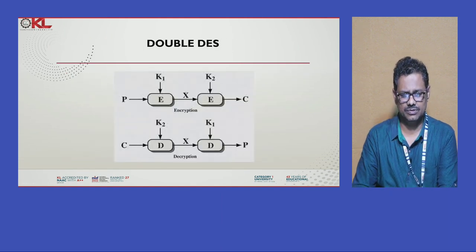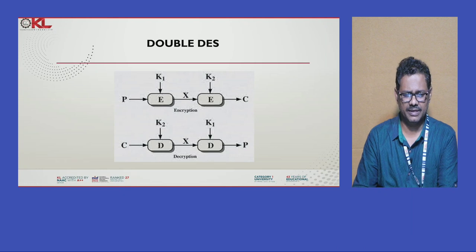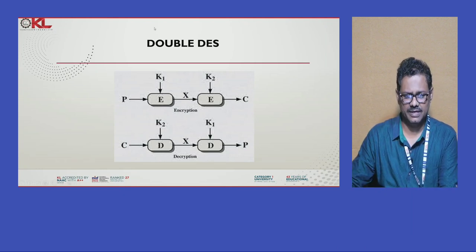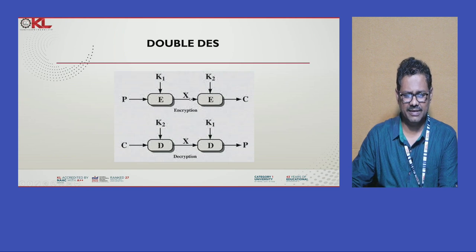In the double DES algorithm, for encryption we are applying two keys, obtaining a cipher text. For decryption, we apply the keys in reverse order. Plain text P — by using K1 we apply encryption and get some intermediate product X. On that X, again we apply K2, and with the help of K2, X is encrypted and finally we get the cipher text.